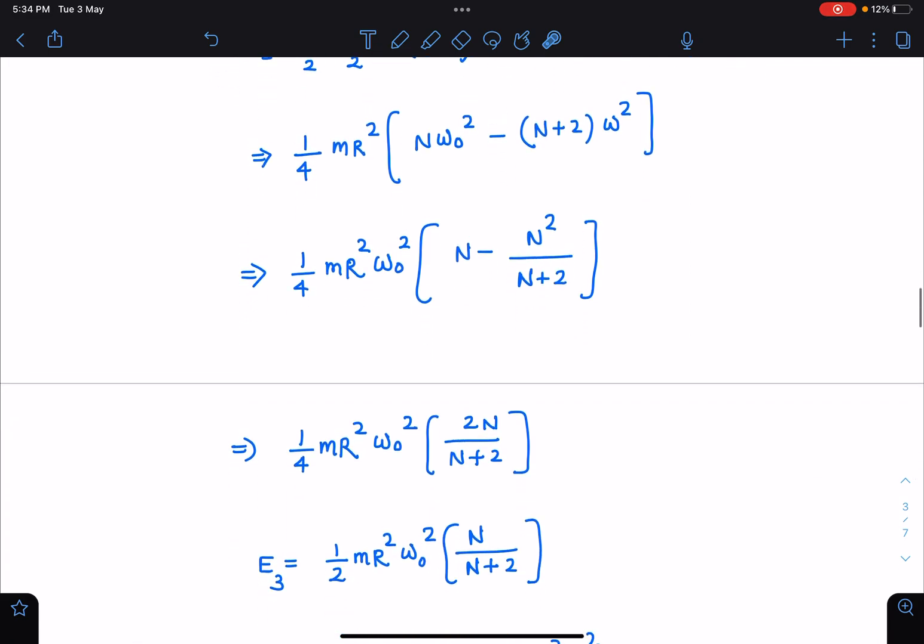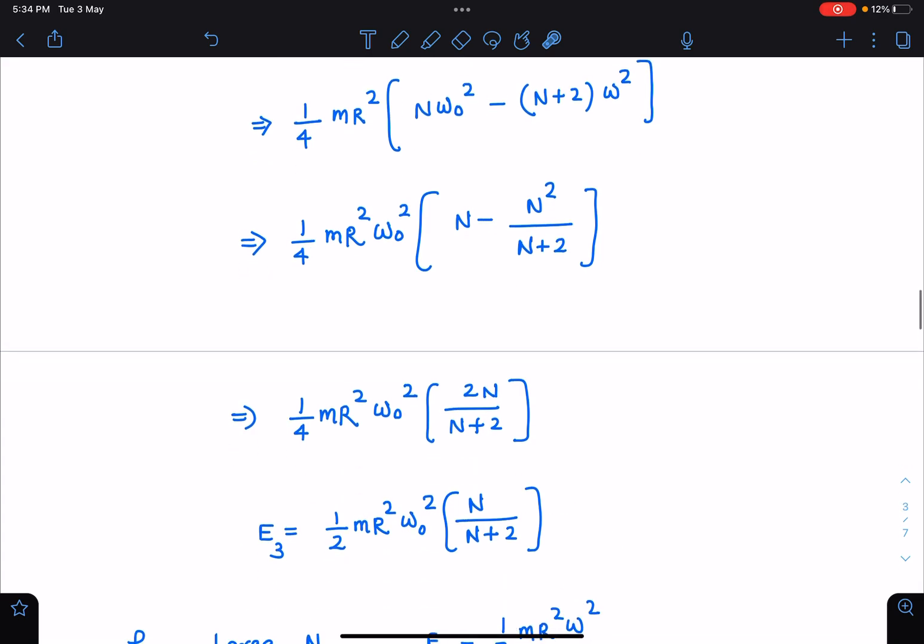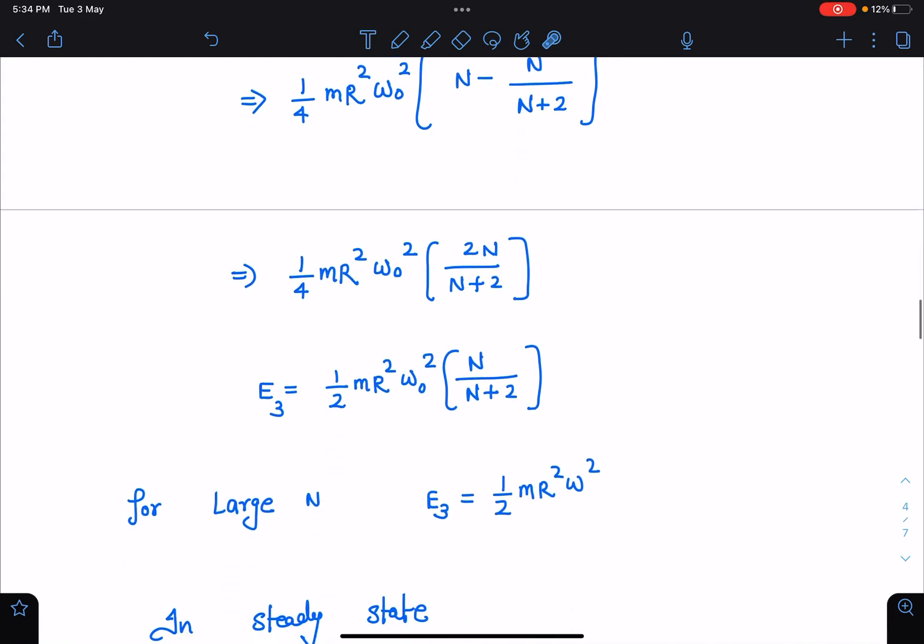When you take this difference and simplify, we are going to get this value. After simplification, E3 as half m R square omega square N/(N+2). But there we are dealing with omega naught, so let's bring everything into omega. Here for large N, I'm just approximating this value as half m R square omega square. Otherwise, if you want to find more accurate value, we will go with this expression.